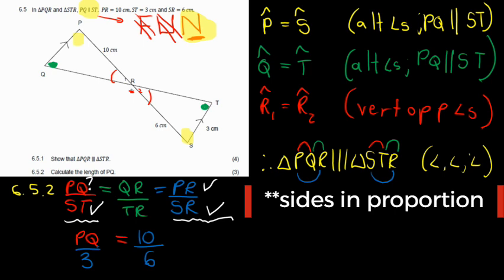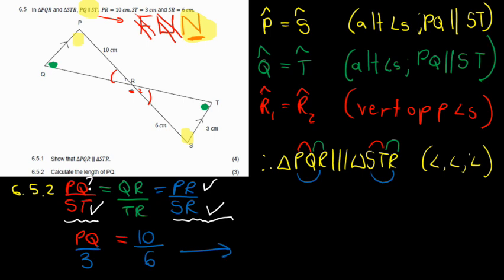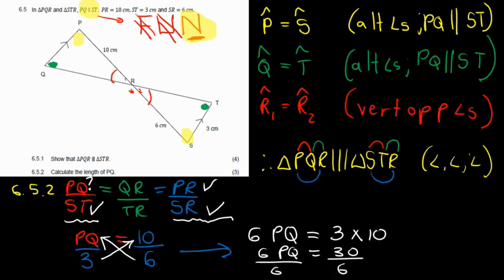And then from there, you can just cross multiply and work this out. So I'm going to go 3 times by 10. And then I'll have 6 times by PQ. So it will be 6PQ is equal to 3 times by 10. This will be 30 this side. And I'll still have 6PQ. If I divide by 6 on both sides, therefore, we will have PQ equal to 5 centimeters because we are given the units of measurement in centimeters. And that's it.